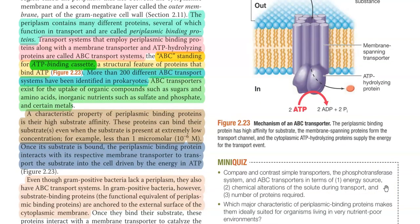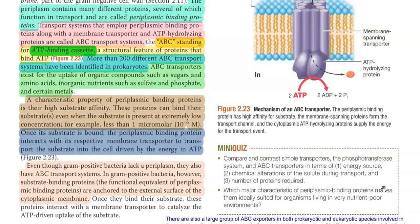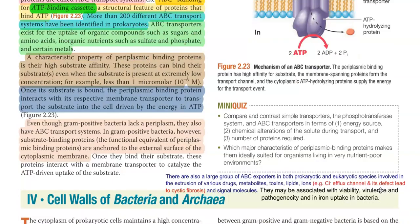Even though gram-positive bacteria lack a periplasm, they also have ABC transport systems. In gram-positive bacteria, substrate binding proteins have replaced the periplasmic binding proteins, and these are anchored to the external surface of the cytoplasmic membrane.